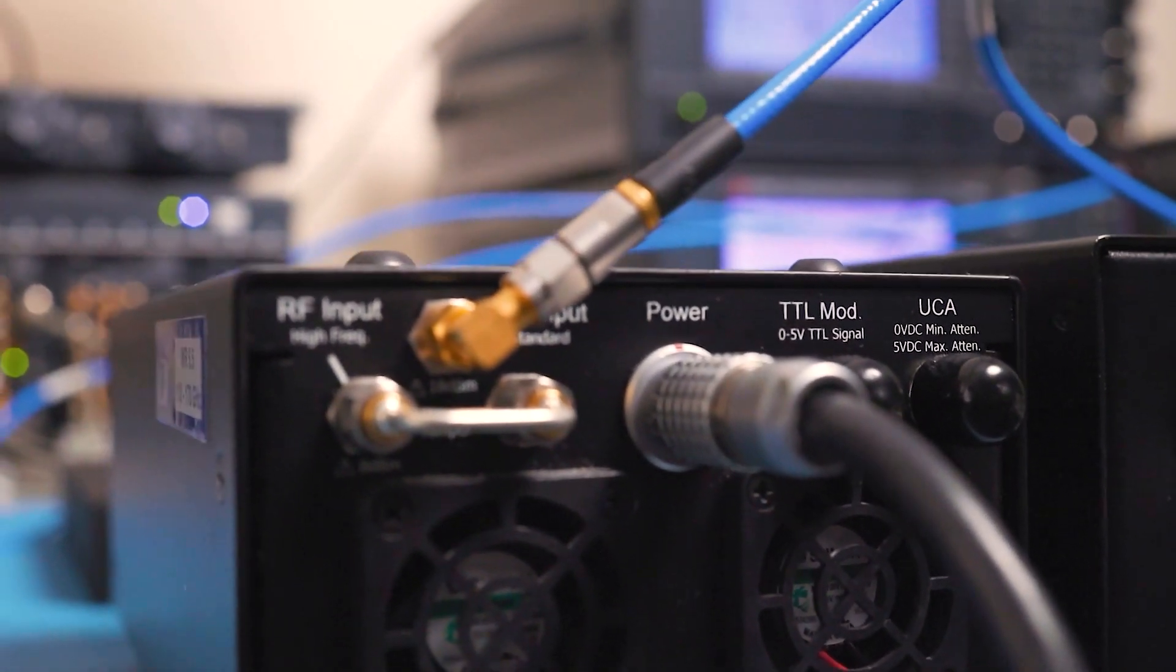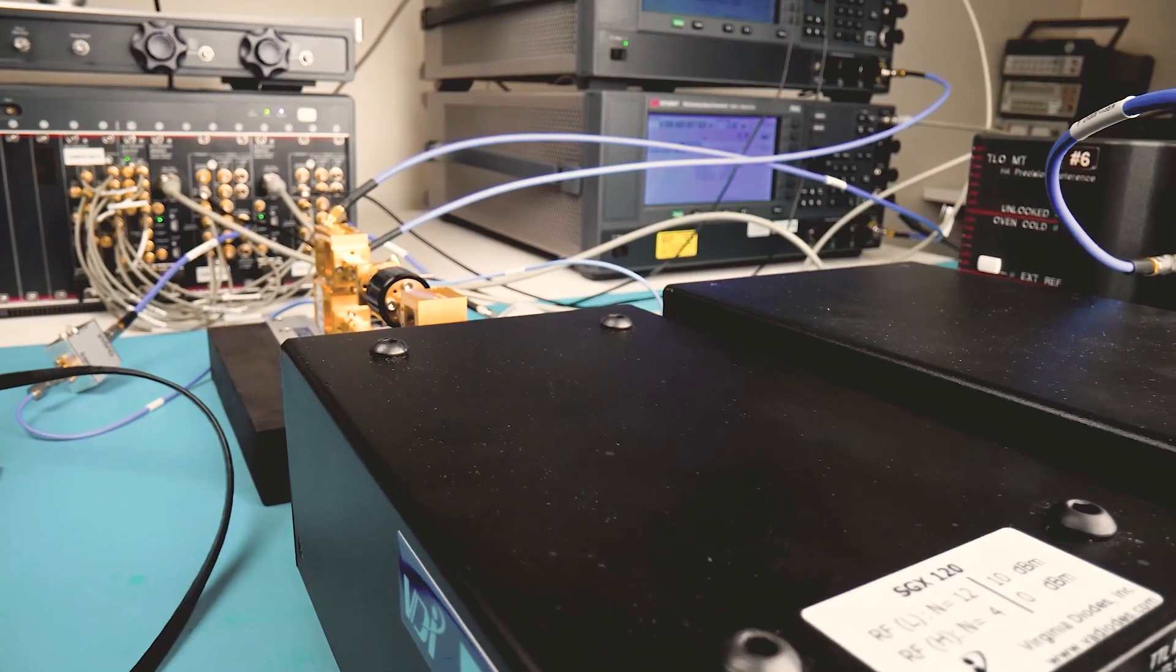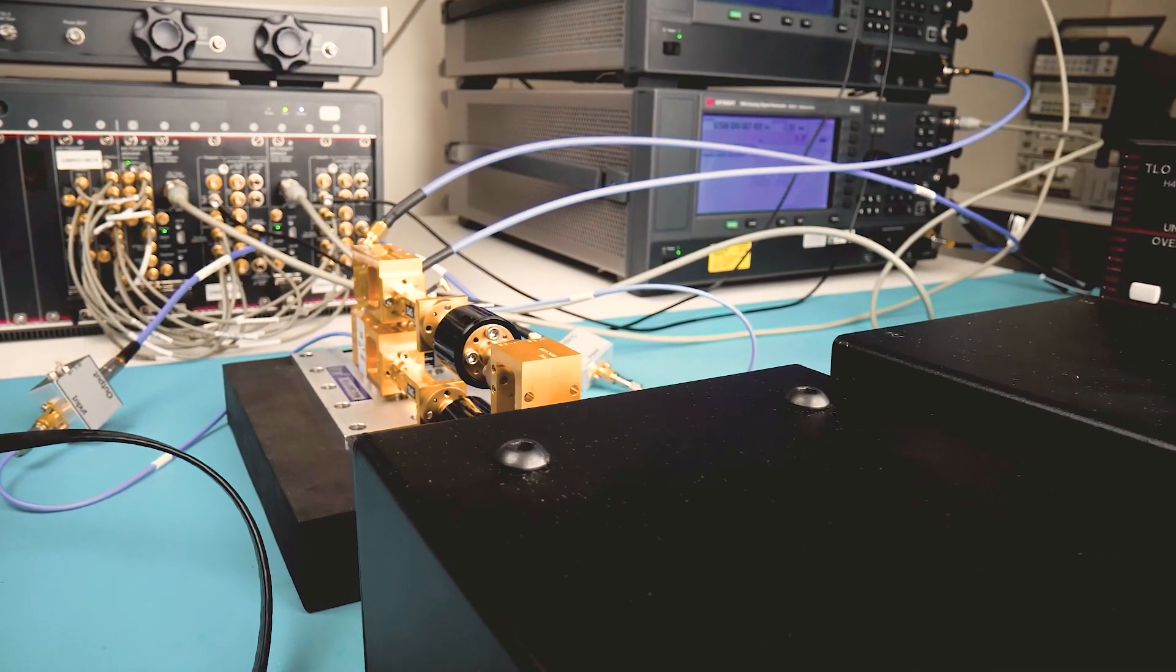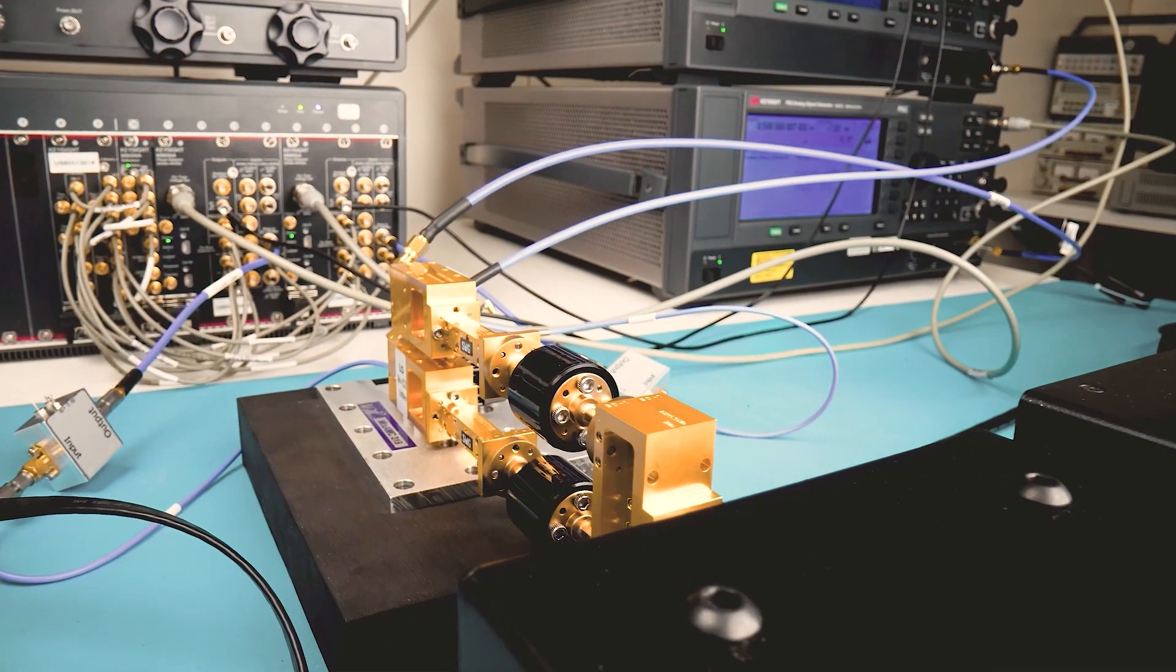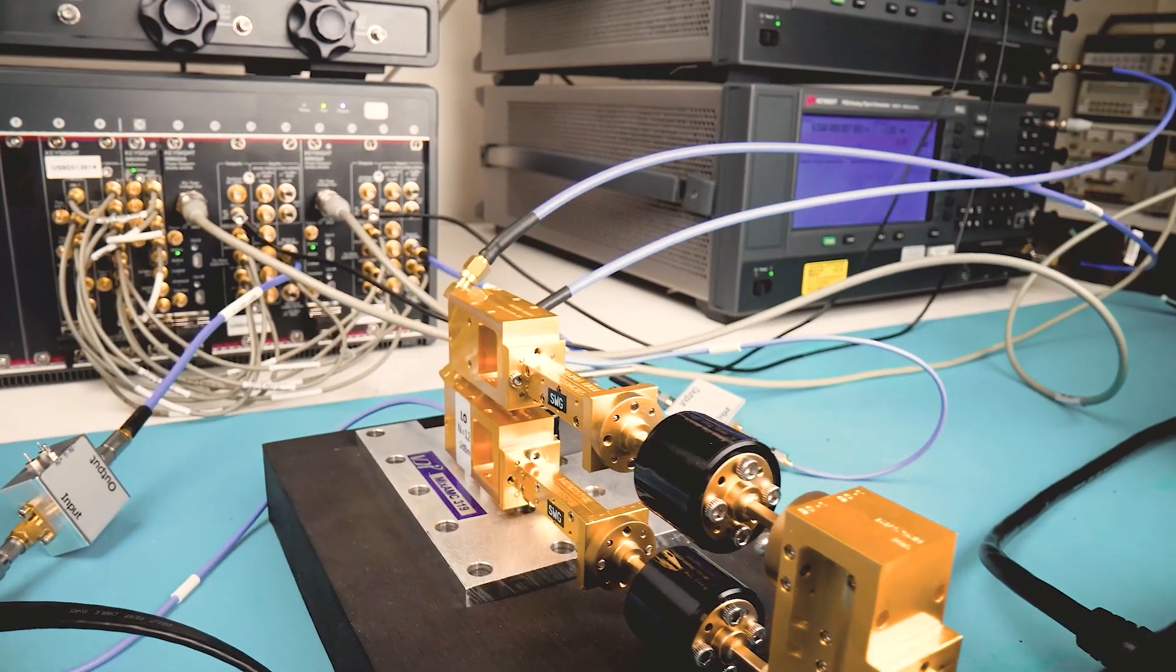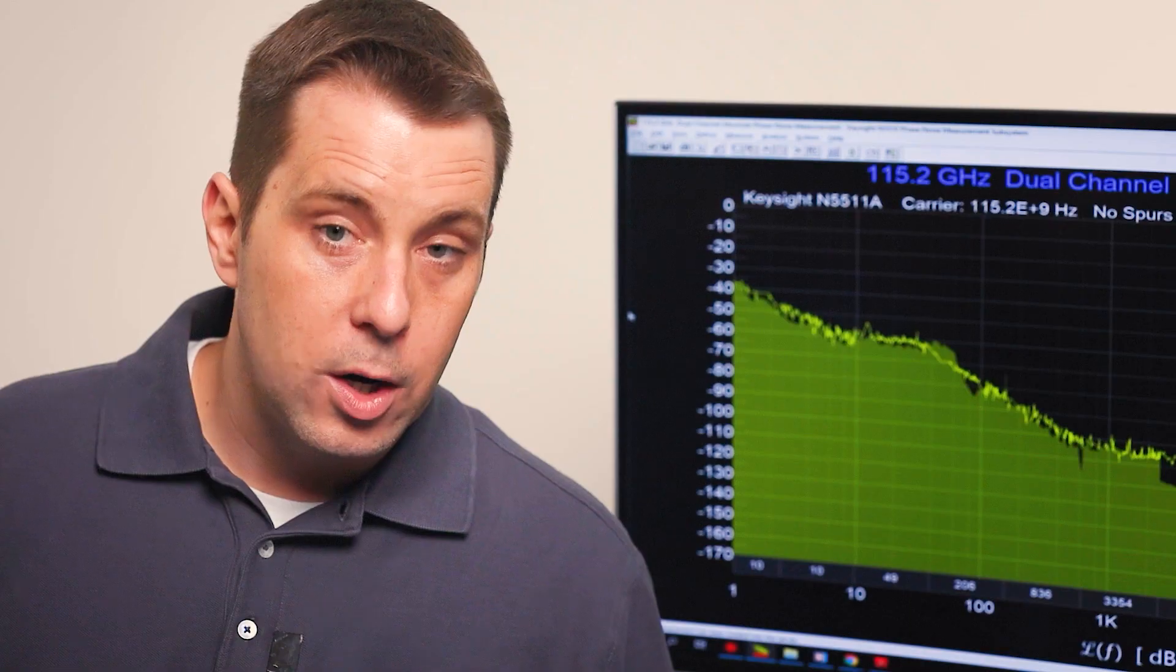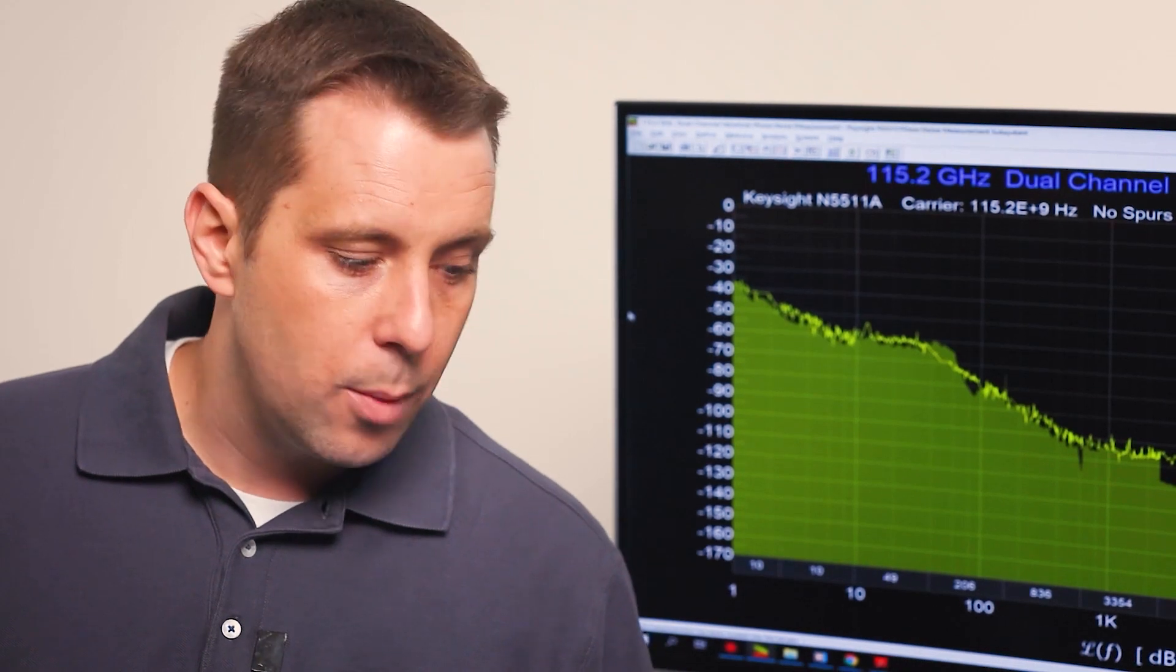We go into a power divider which splits into two channels for cross-correlation. There's two D-band waveguide mixers that are being used as phase detectors, which means the RF and the LO are in quadrature or at 90 degrees from each other.